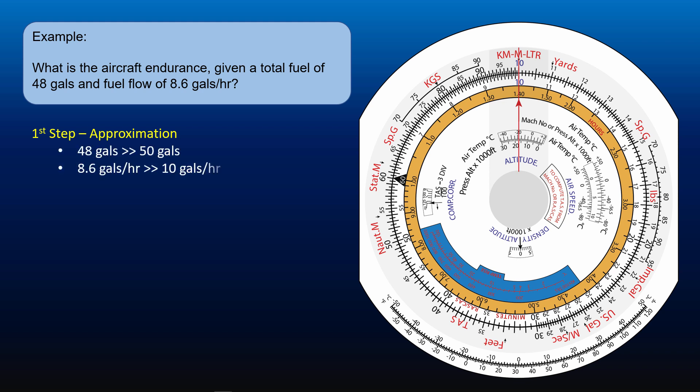Then round up 8.6 gallons per hour to 10 gallons per hour. We then mentally divide 50 gallons by 10 gallons per hour to give us the rough answer of 5 hours endurance.